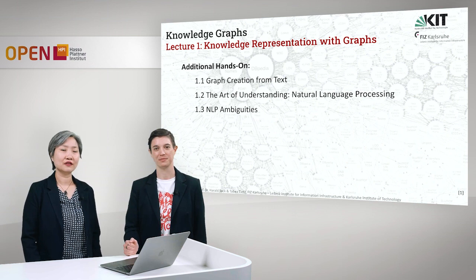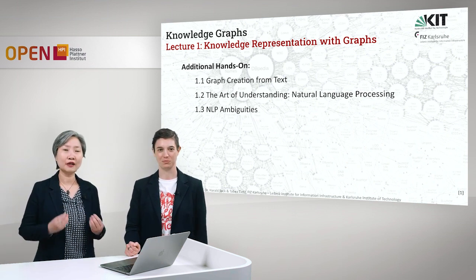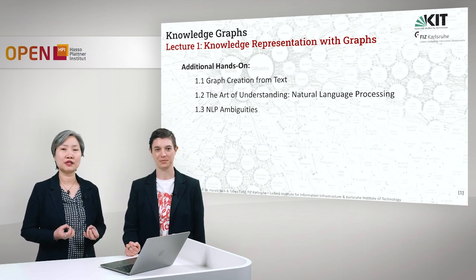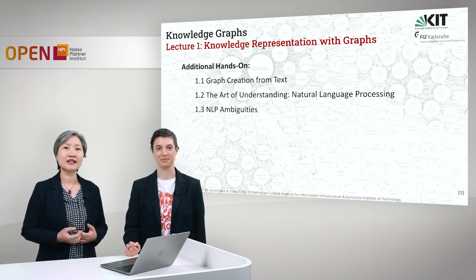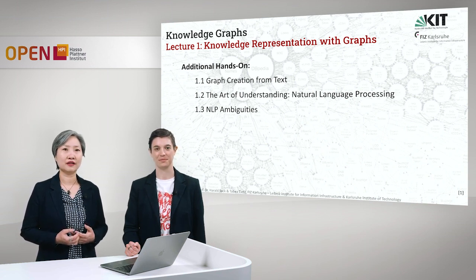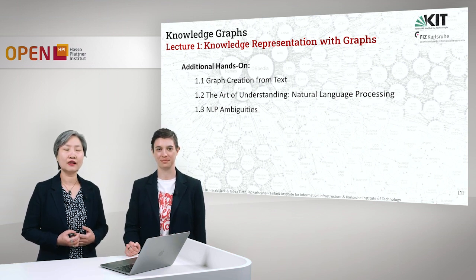In the second hands-on, this will be our first Python notebook where we will show you how the manual creation of a graph from text proceeds — from a raw text through different natural language processing steps such as tokenization, syntactic analysis which includes part-of-speech tagging, dependency parsing, as well as named entity recognition. In the last notebook for this week we will show you things about semantic ambiguities, word sense disambiguation using the LESK algorithm, as well as WordNet and synsets.